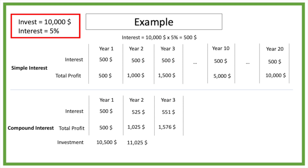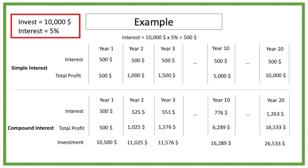If we keep on reinvesting our profits, we will have a profit of 6,289 dollar after 10 years and 16,533 dollar after 20 years. You can see when applying compound interest or when you reinvest your profits, you can have bigger profits over time. The more time goes by, the larger the difference will be between simple and compound interest. After 20 years the profit when applying compound interest is 16,533 compared to the 10,000 dollar when applying simple interest or when you don't reinvest your profits.